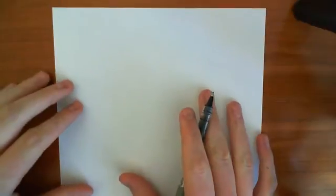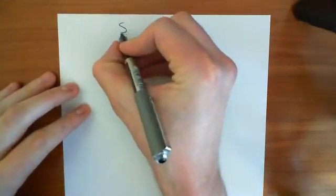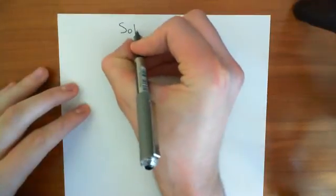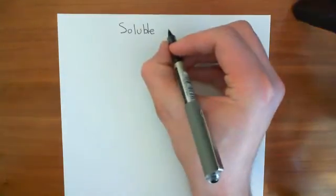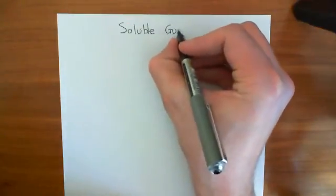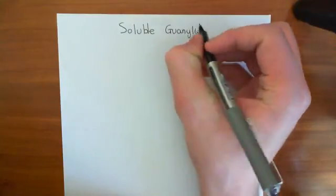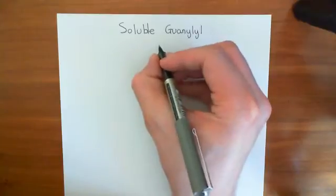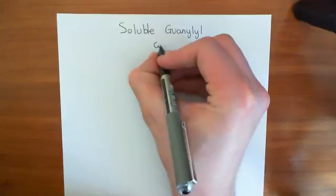Welcome to this next video in the playlist on the cardiovascular system. In this video, we're going to look in detail at the soluble guanylate cyclase enzyme, which is important in the nitric oxide signaling pathways, i.e. the endothelium-derived relaxation. So, soluble guanylate cyclase.